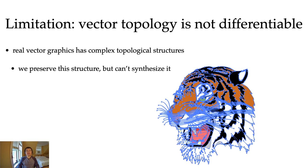One major limitation of our work is that we do not do anything to the vector topology. This is both a blessing and a curse. Real vector graphics has complex topological structure like the one we show on the right. We preserve this structure during the optimization, but we do not synthesize more. Maybe some language processing models like RNN or transformer can help generating the topology.